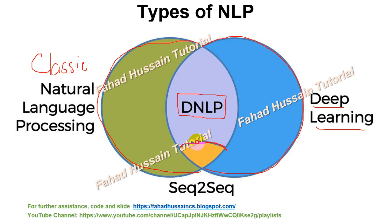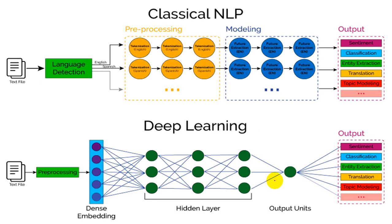In the classical NLP models we have tokenization, word-to-vector, and bag of words. In deep NLP, when we combine classical NLP with deep learning, the key models involve sequence-to-sequence architectures using recurrent neural networks. I can say that pre-processing accounts for about 70% of model performance — whether in regression, classification, or clustering tasks.